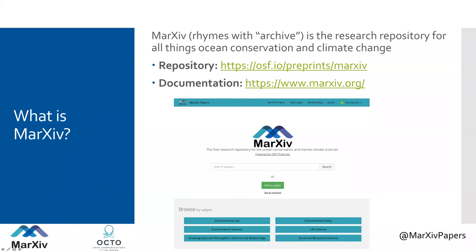Markive — it rhymes with archive — is the research repository for basically all things related to ocean conservation and climate change research. The repository itself is hosted on the Open Science Framework. You can get to that at osf.io/preprints/Markive. The documentation and much of the other information is available on the Markive.org website, where you can find all the papers.